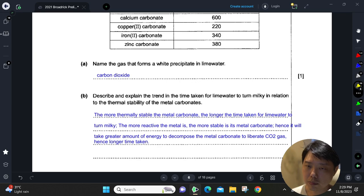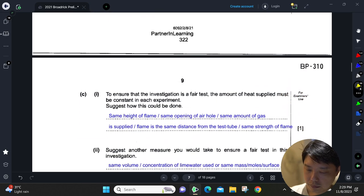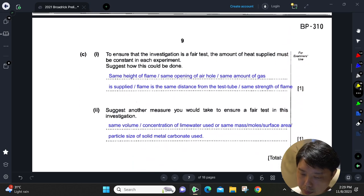The most stable from this table would be your calcium carbonate, then the least stable will be your copper carbonate, just looking at the timing. Part (c)(i): to ensure that it is a fair test, the amount of heat supplied must be constant.